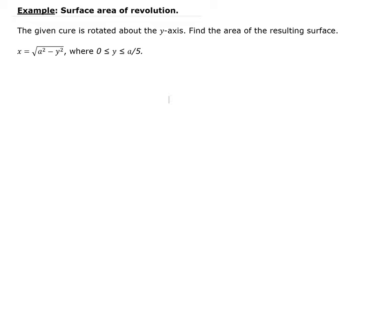In this example we want to find the surface area of revolution. We're given the curve x equals the square root of a squared minus y squared, where y is between 0 and a over 5. Let's first sketch the region to get a visual of what's going on. Squaring both sides gives x squared plus y squared equals a squared, which is just the equation of a circle with radius a.